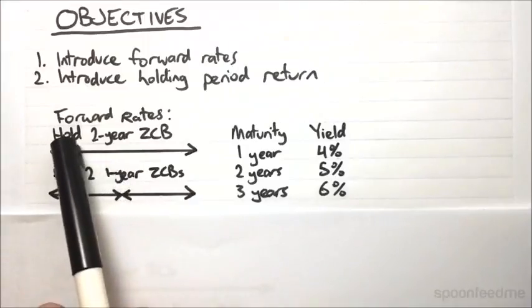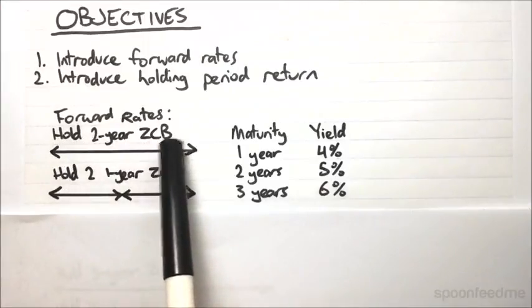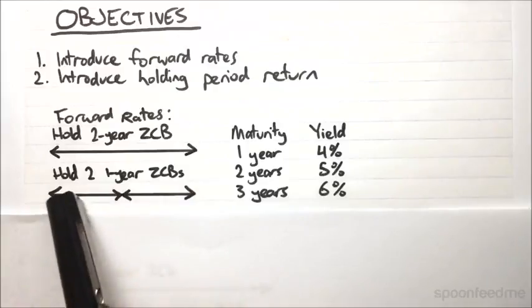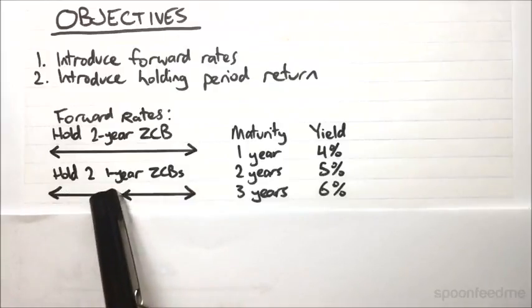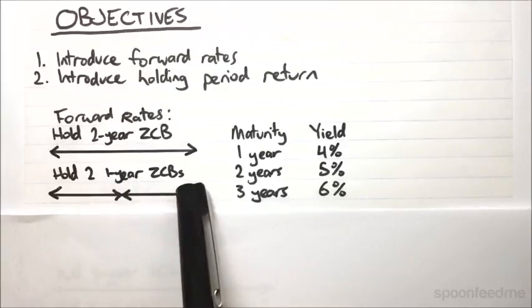Investment number one has you holding a two-year zero coupon bond. Investment number two has you holding a one-year zero coupon bond. After which, when you receive all the money back, you invest all of that back into another zero coupon bond for one year.